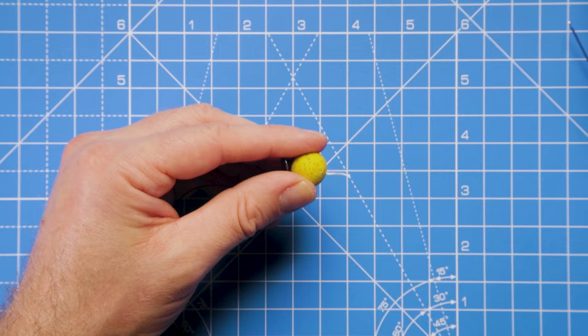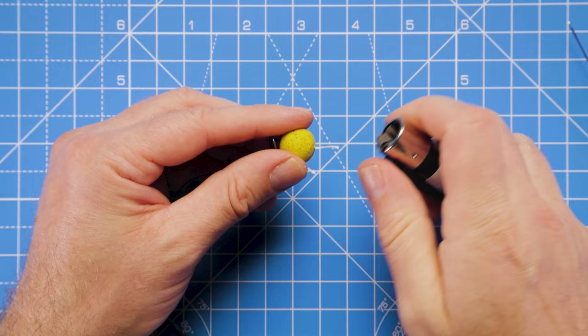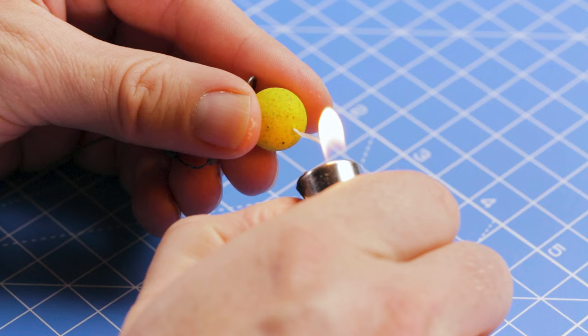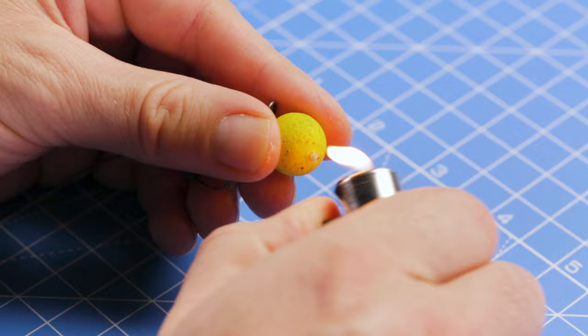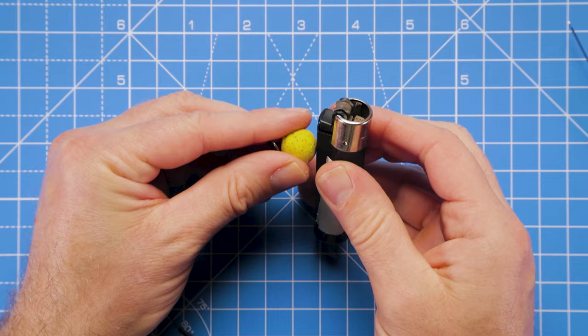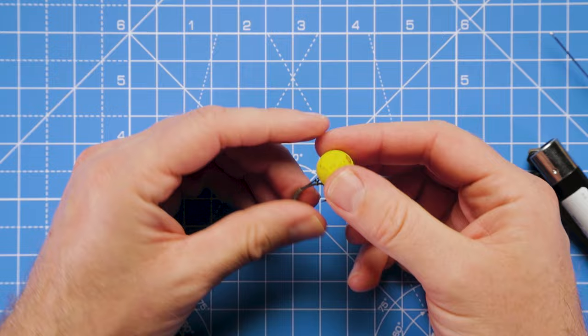We'll just trim off those tag ends, take our lighter, just carefully, just slowly melt down those tag ends, flatten off the blobs with the back of the lighter, and there we go, that's our hook bait securely in position. The rig's really taking shape now.